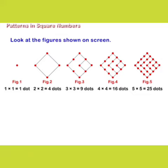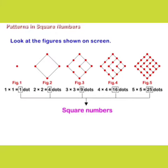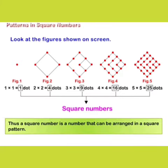Figure 3: 3 × 3 = 9 dots. Figure 4: 4 × 4 = 16 dots. Figure 5: 5 × 5 = 25 dots. Here, 1, 4, 9, 16, and 25 are square numbers.